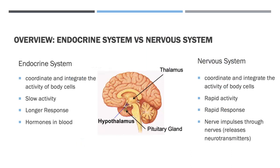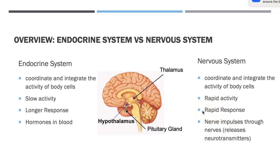Let's compare the endocrine system and the nervous system. They both work to help coordinate and integrate the activities of our body cells, but our endocrine system does this very slowly. We have to release the hormones from our pituitary gland, which then travels through the blood to a target endocrine gland, which may then release another hormone to trigger the actual mechanism we want. So it takes a long time, but it lasts as a longer response. Whereas with our nervous system, we have rapid activity — information travels through a nerve impulse and releases a neurotransmitter, giving us a rapid response that is typically not long-lasting.